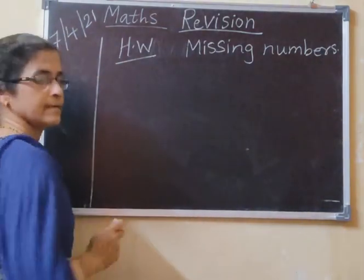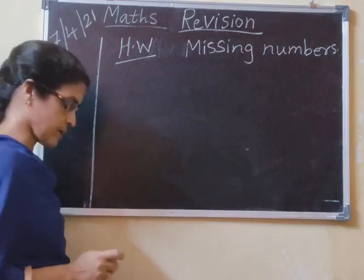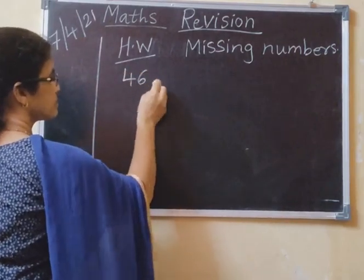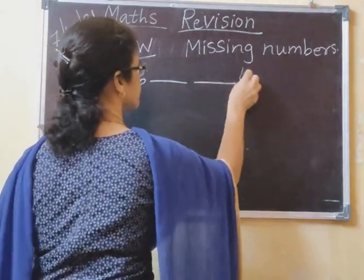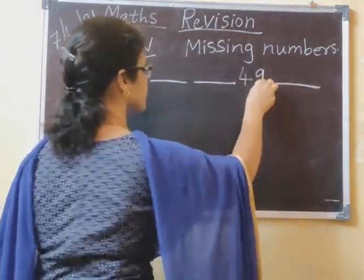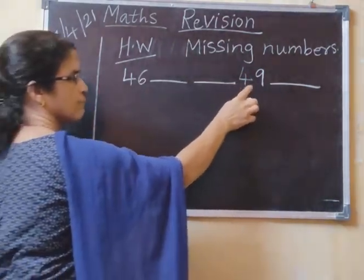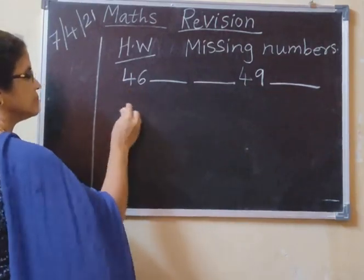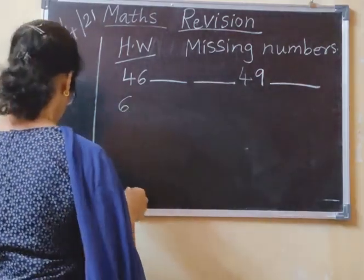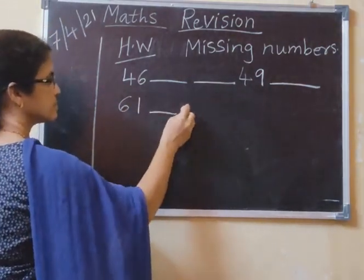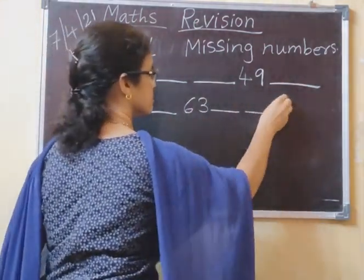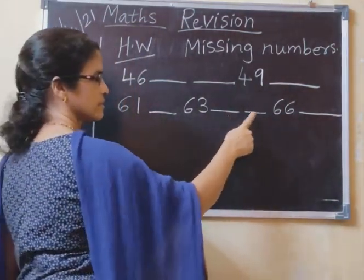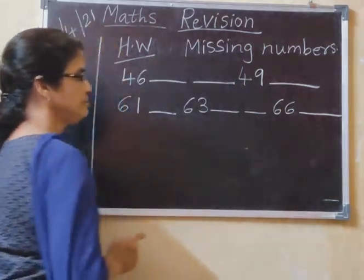Okay, I have missing numbers. Forty-six, dash, dash, forty-nine, dash. Leave one line. Sixty-one, dash, sixty-three, dash, dash, sixty-six, dash. Finished? Eighty-five, dash, eighty-seven, dash, dash, dash.